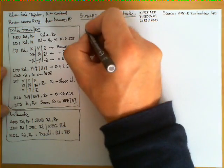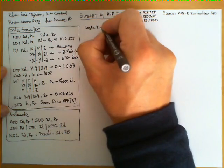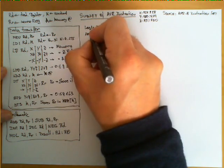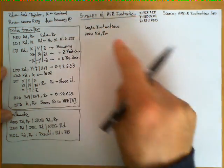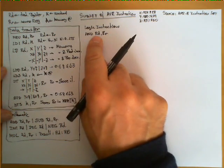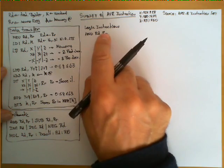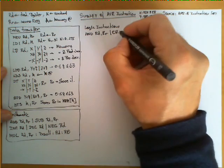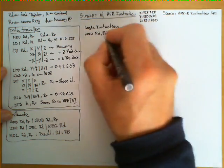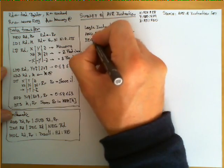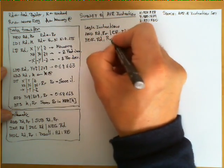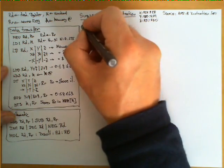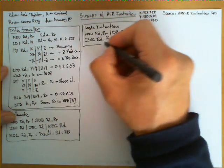The third category is logic instructions. These are very intuitive. We have AND RD, RR for bitwise conjunction, where RD gets the result of the bitwise AND between RD and RR. OR RD, RR for bitwise disjunction, and EOR RD, RR for the bitwise exclusive OR of two 8-bit registers. As usual, the result is stored in RD.